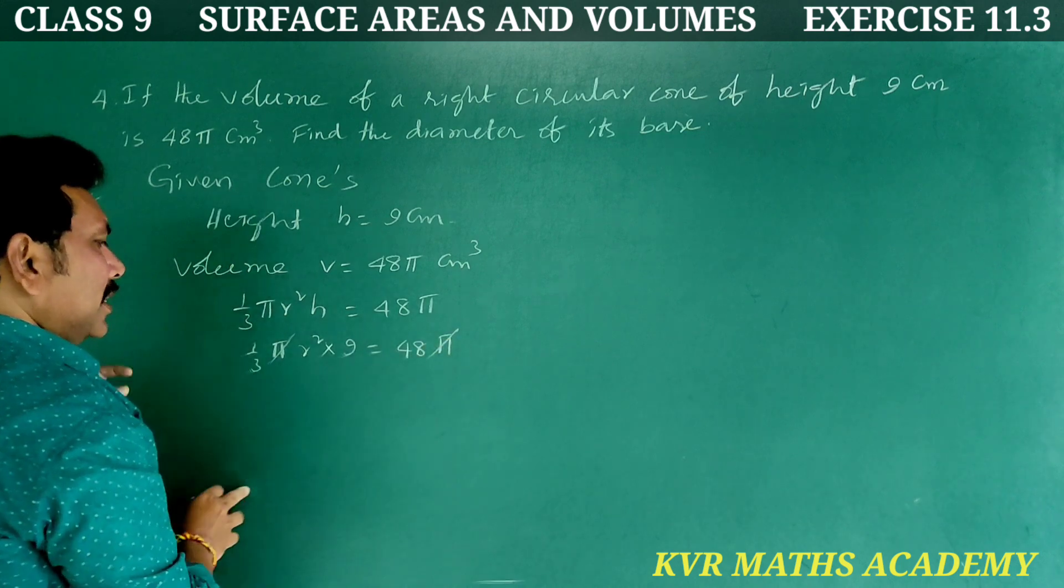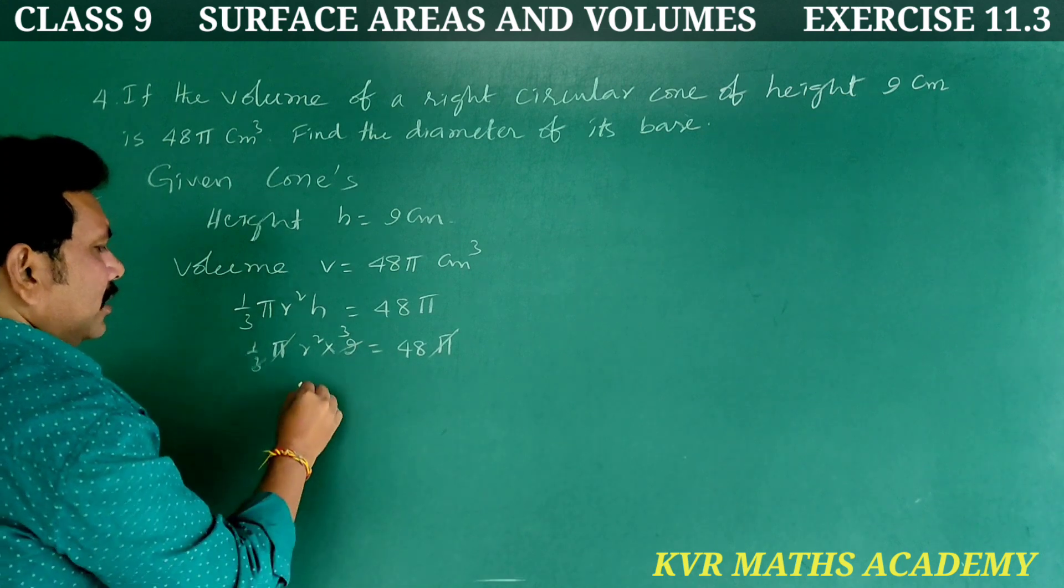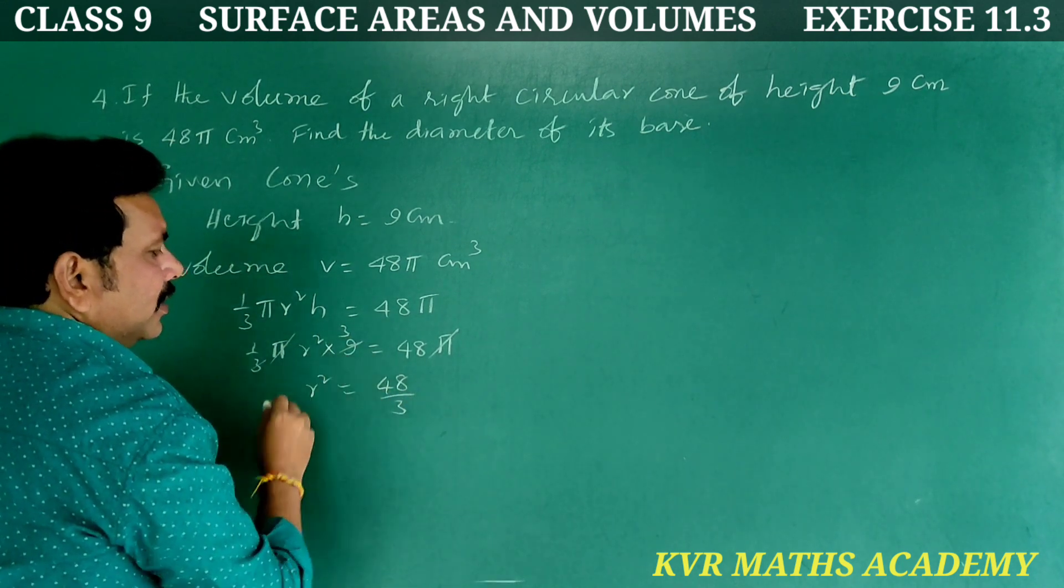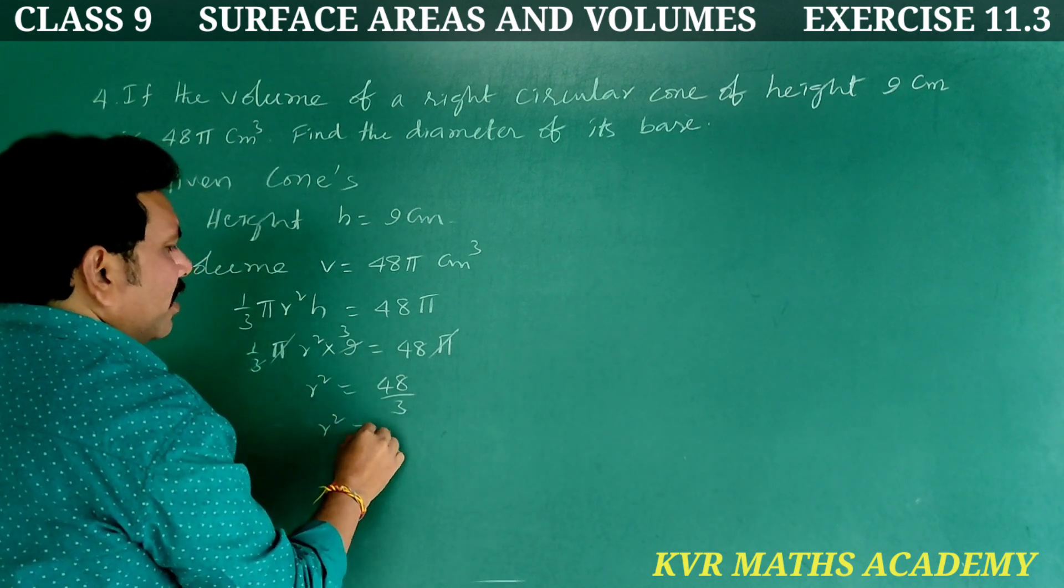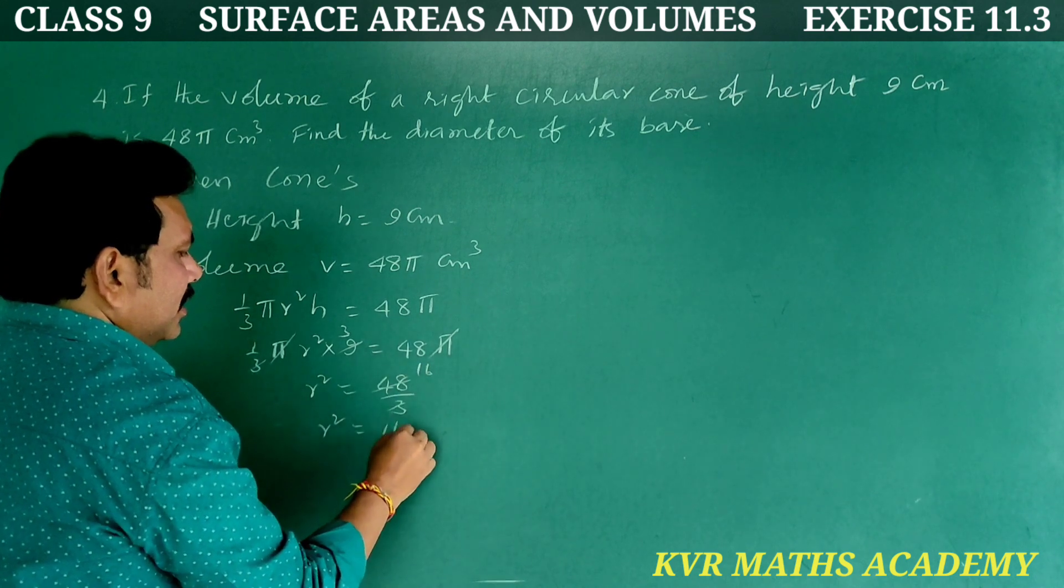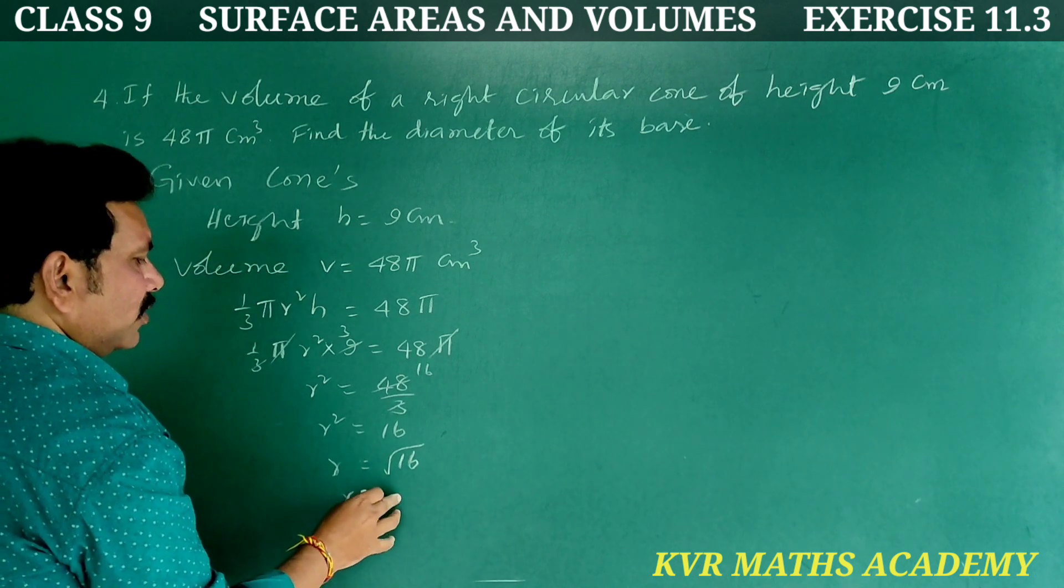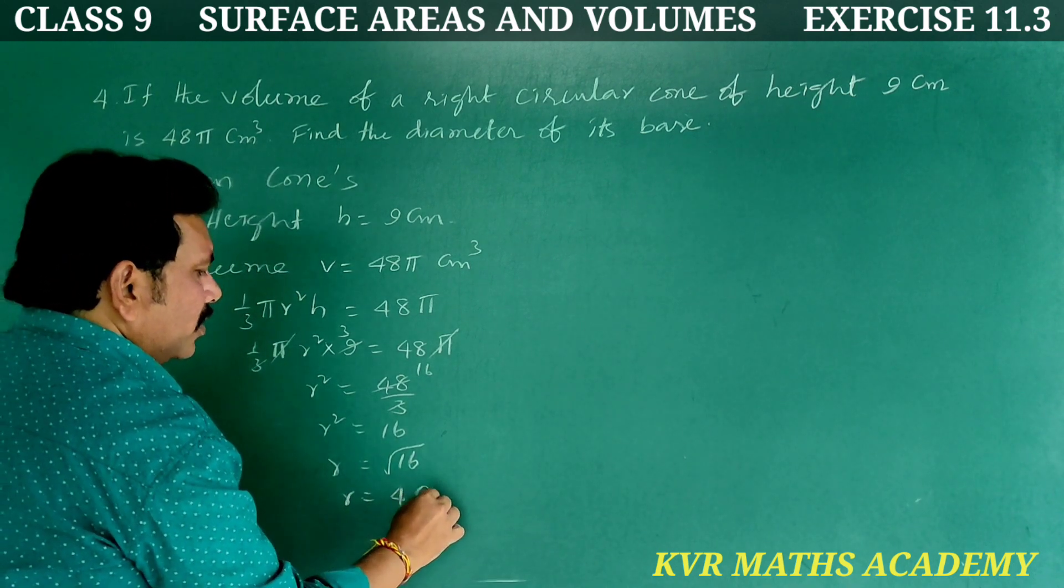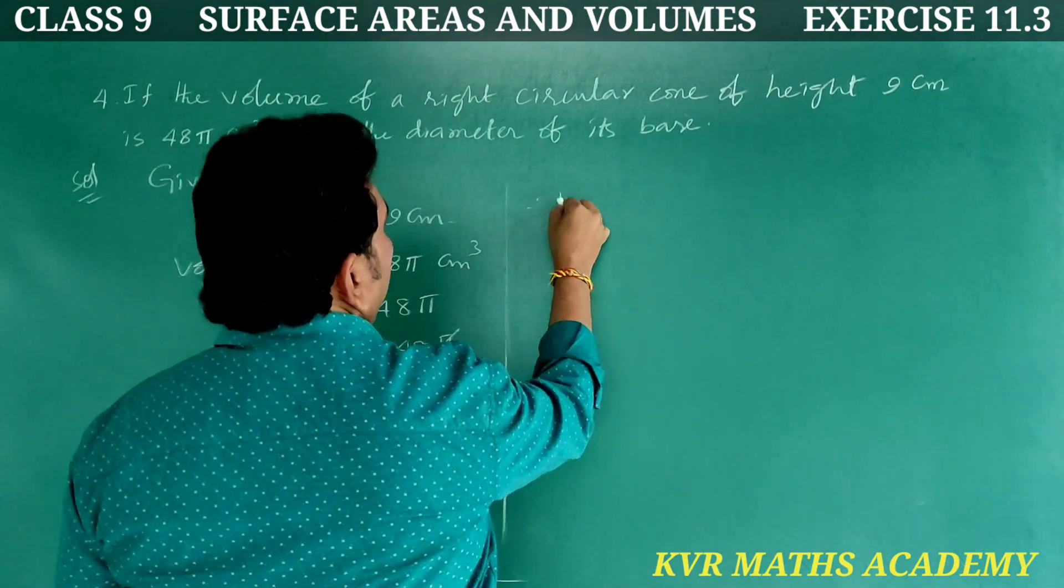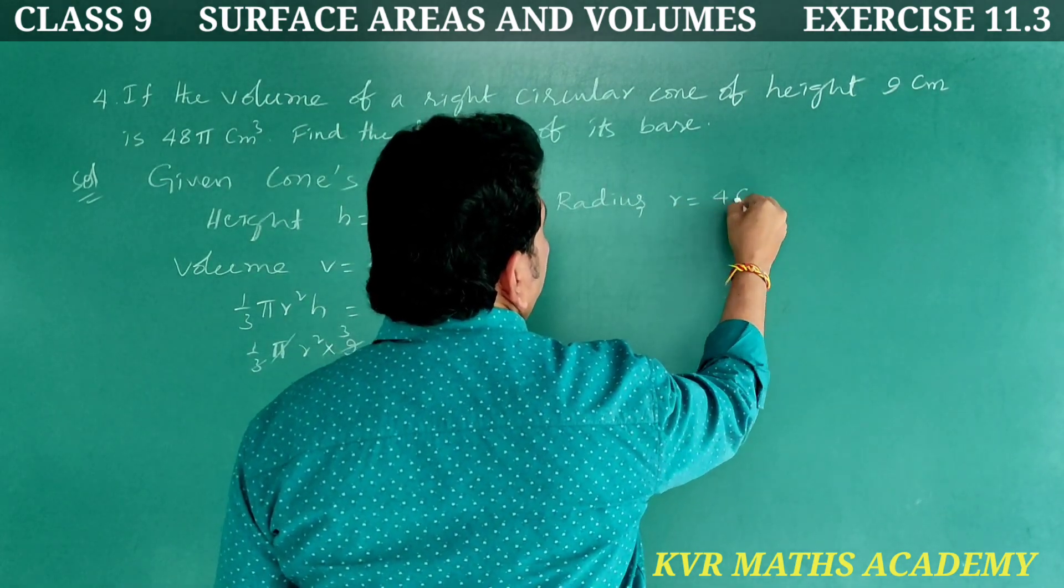Both sides pi pi cancel. Next, 3 in 9, 3 times get cancelled. So r square is equal to 48 by 3. r square is equal to 16. R is equal to root of 16. R is equal to 4 centimeters. Therefore, radius r is equal to 4 centimeters.